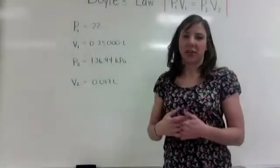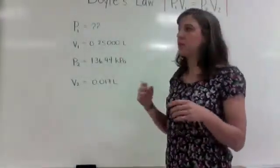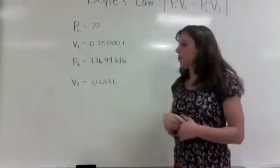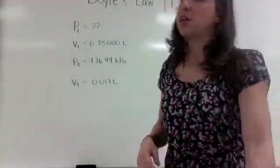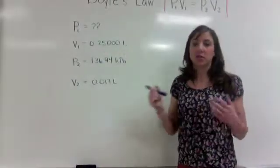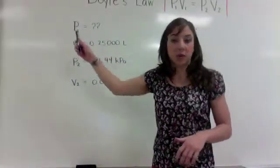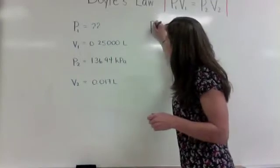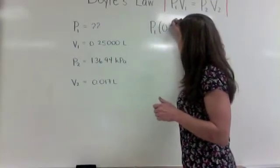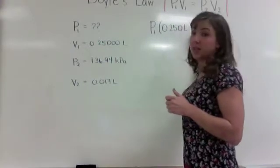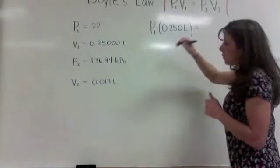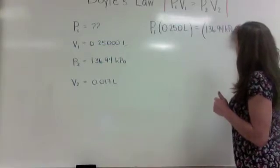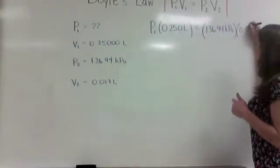Using the example with the pneumatic door: we know we're looking for the initial pressure. When the door slams shut, the pressure goes up to 136.94 kPa with a volume of 0.017 liters. The initial volume of the pneumatic door is 0.25 liters. First, we list our variables from the question, then we plug into the equation. We leave P1 as is, plug in 0.25 liters, and that equals 136.94 kilopascals multiplied by 0.017 liters. Remember to always include your units.